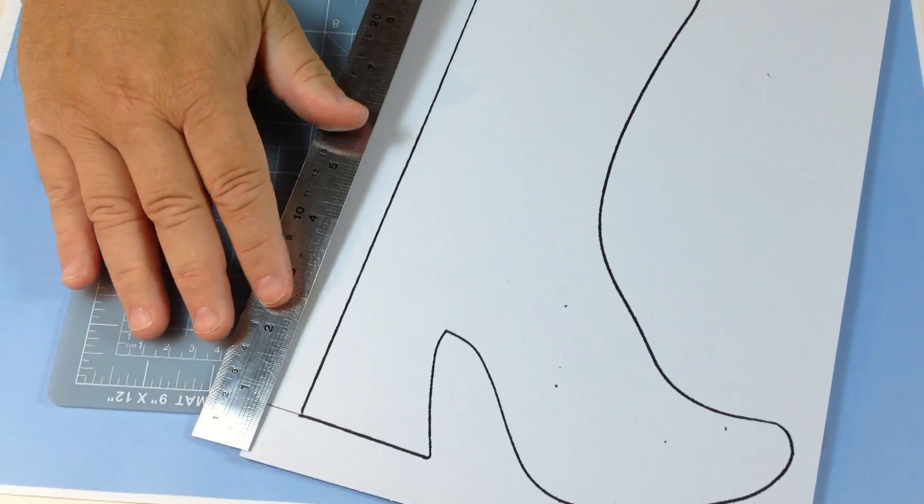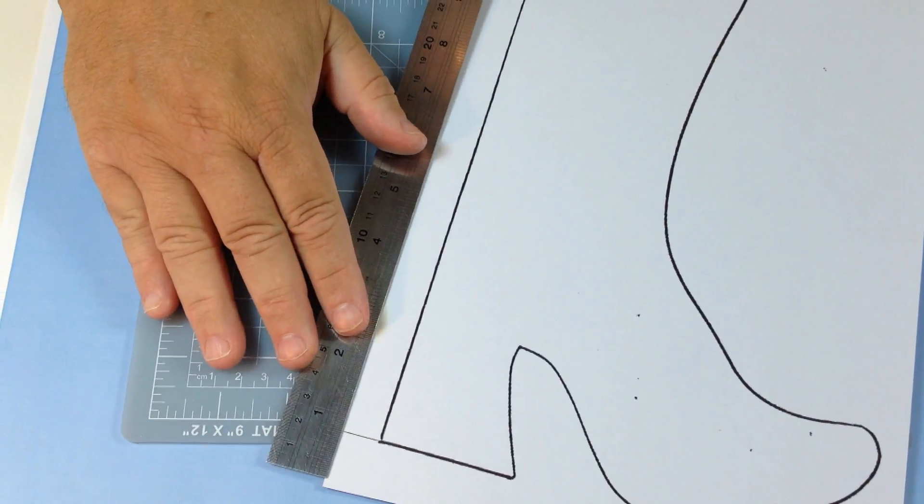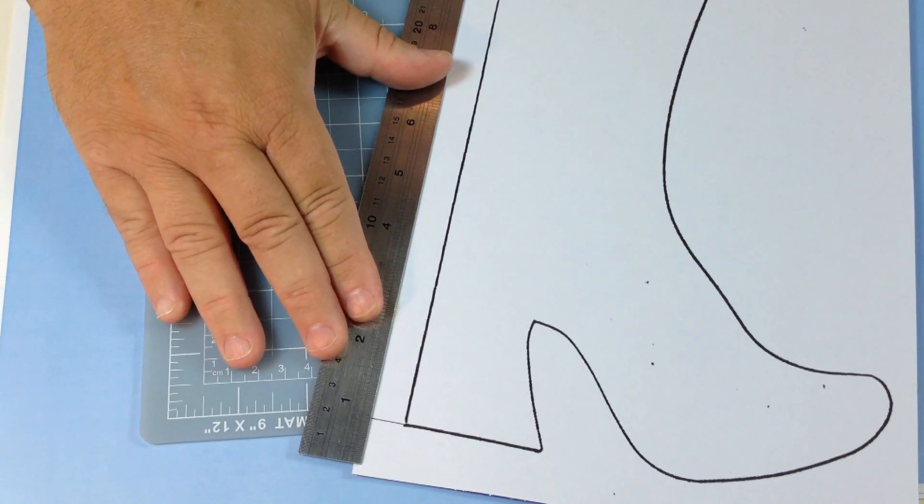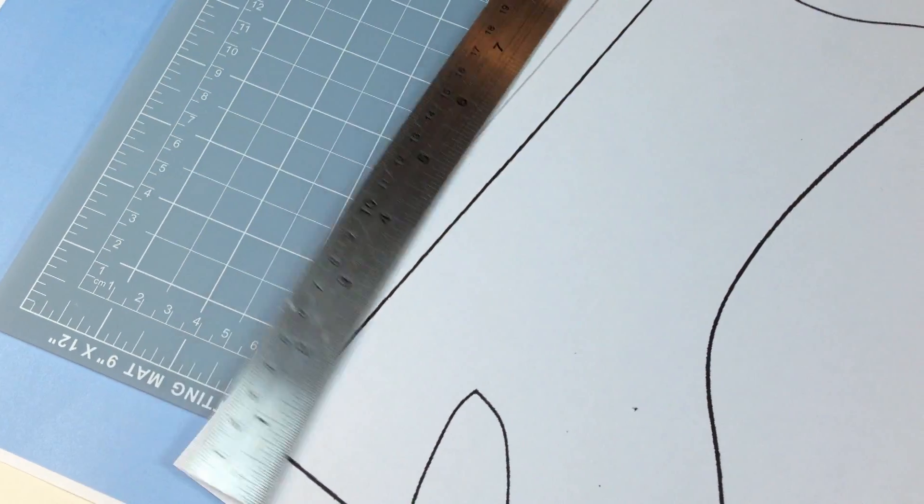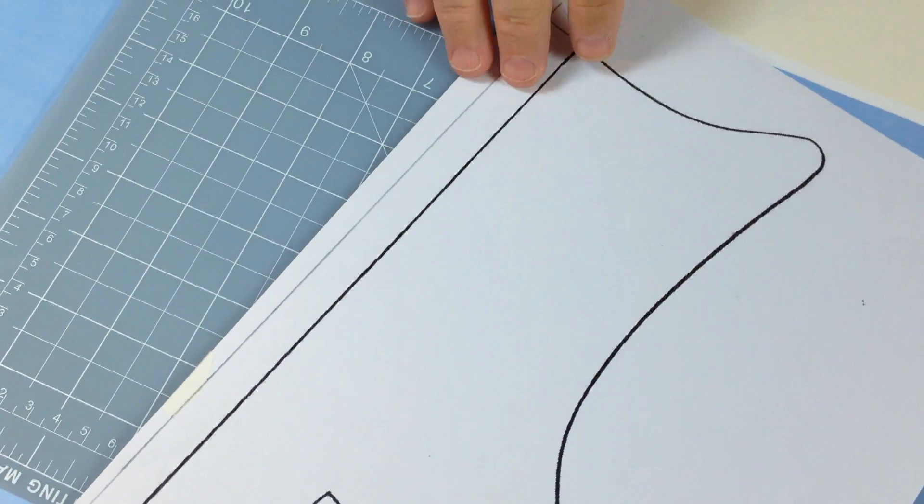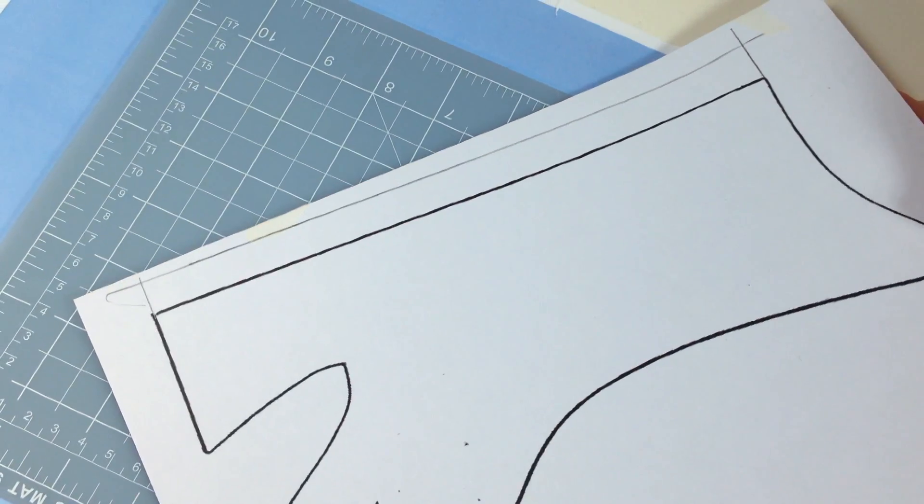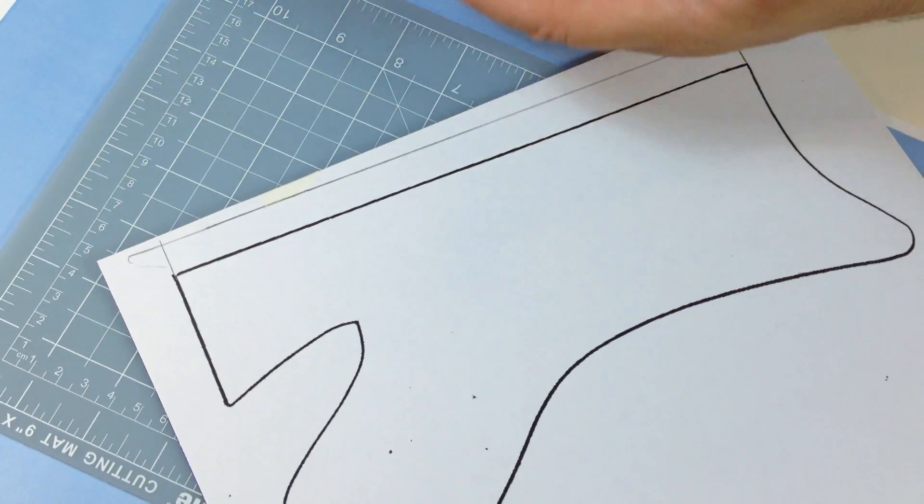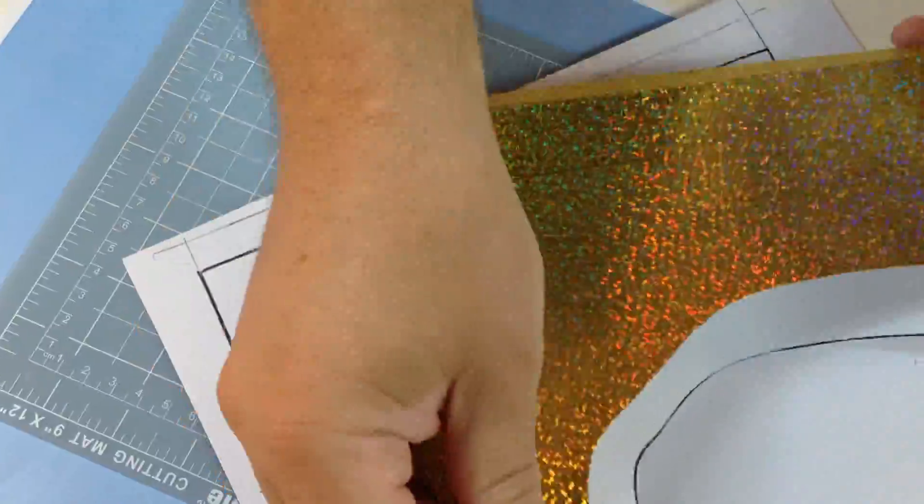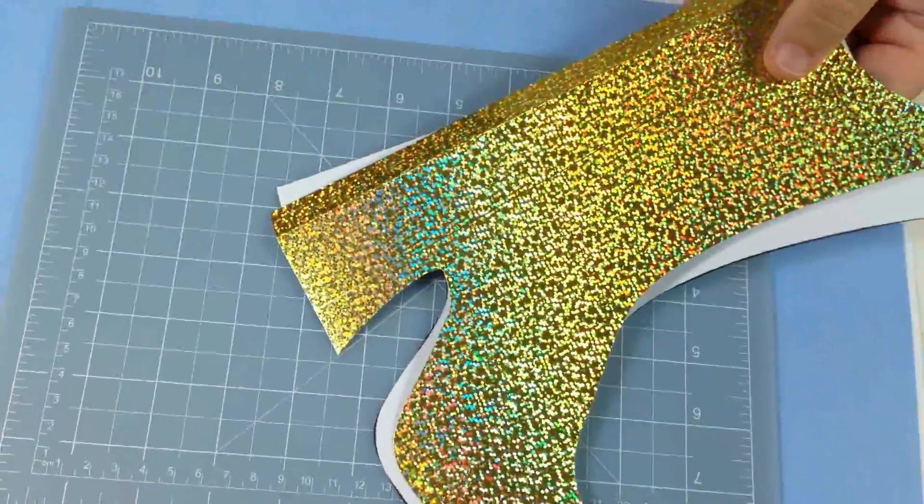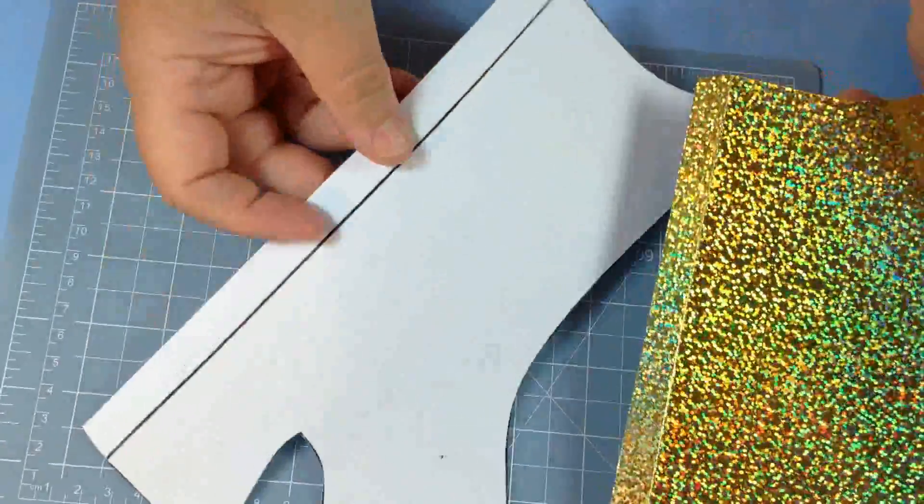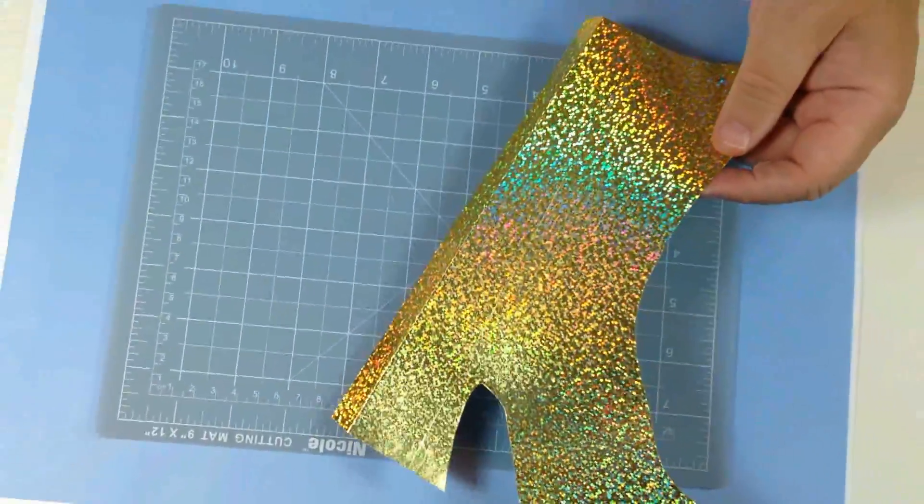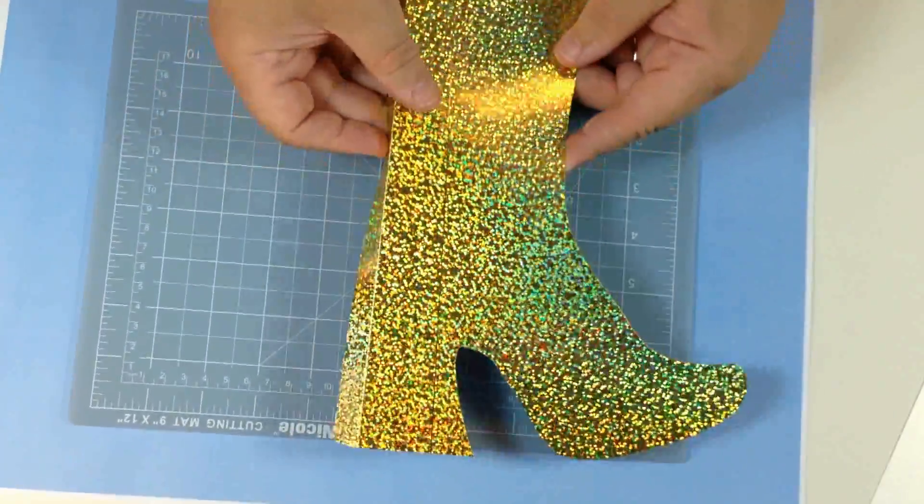I'll just decide how thick I want it to be here and draw a line down like so. I've created my own little flap on the back that's going to hinge behind the boot. When you've cut that out, you end up with something similar to this. You can see the extra bit there with this flap.